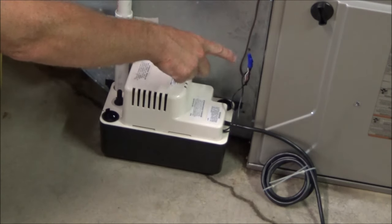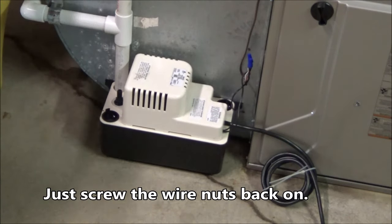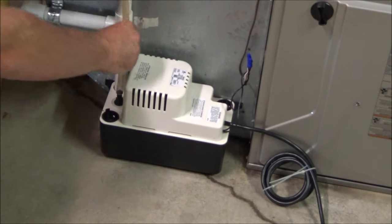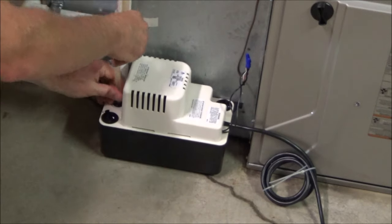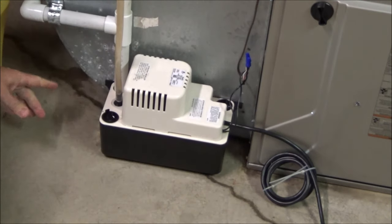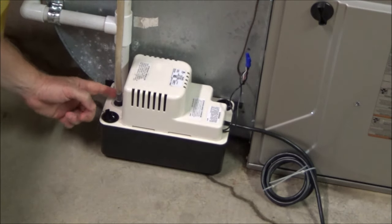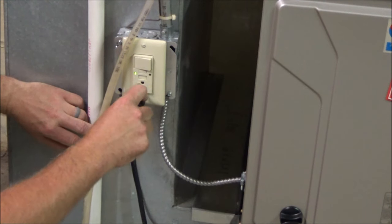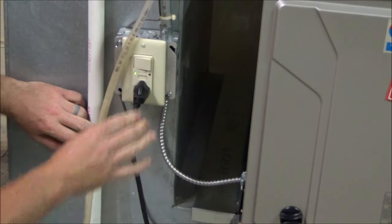We've got the safety switch reconnected and now we can go ahead and put our discharge tubing back on the check valve. You can also put a hose clamp on here if you like to make sure that doesn't leak. Now we can go ahead and plug this back in and turn the furnace back on.